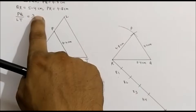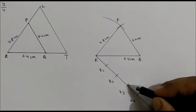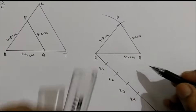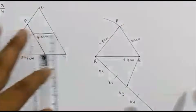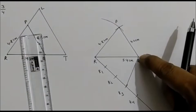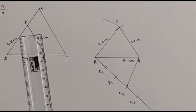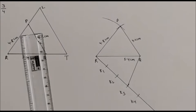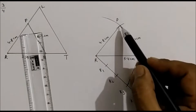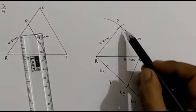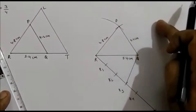Now triangle PQ ratio is 3. PQ ratio is 3, so this third part — join R3 with point Q. We have joined the third arc with Q. So we have constructed triangle PQR.